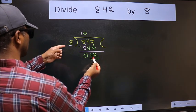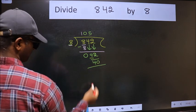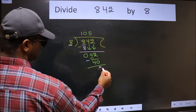A number close to 42 in 8 table is 8 fives 40. Now we should subtract. We get 2.